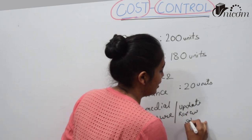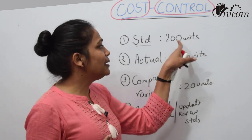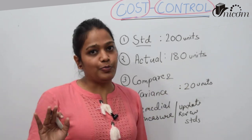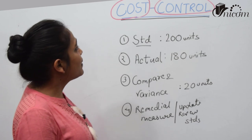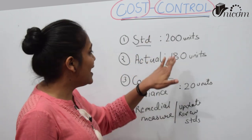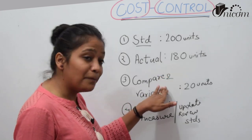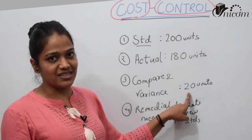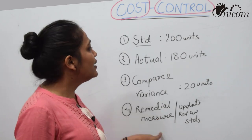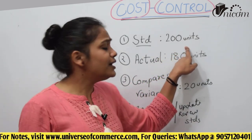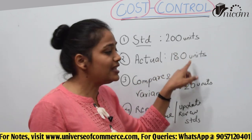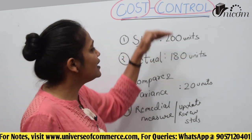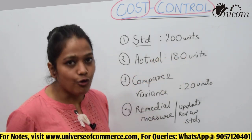You may revise your standards — for example, if 180 units is the best possible production output, you can lower the standard to 180. So the controlling procedure is: set standards, determine actual performance, compare, identify variance, analyze it, then take remedial and corrective measures to achieve the standard set. But if your actual performance matches the standard — say 200 units produced against a standard of 200 — then the process ends. Your target is achieved.